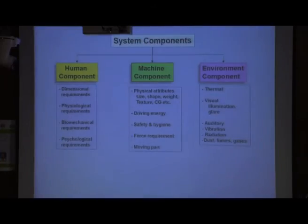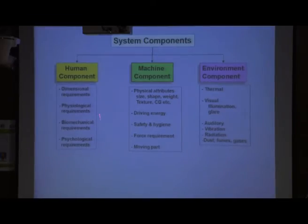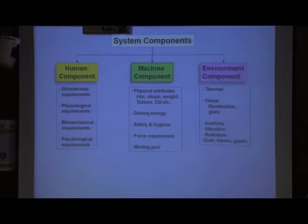In the man-machine-environment system, there are three components. Under human component, we discuss dimensional requirement, physiological requirement, biomechanical requirement, and psychological requirement. Under machine component, we discuss physical attributes of that machine or facility, energy to run the machine, safety and hygiene, force requirement, and moving parts. Under environmental component, we discuss thermal conditions, visual factors (illumination, glare), auditory factors, vibration, radiation, and dust.